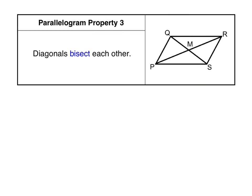Parallelogram property 3 tells us that the diagonals bisect each other. The word bisect means they're divided into two equal parts. In the diagram, diagonal QS and diagonal PR intersect at point M. If the diagonals are bisecting each other, they're dividing each other into two congruent halves. So QM is congruent to MS, and PM is congruent to MR. Each diagonal is cut in half by the intersection of the other diagonal.